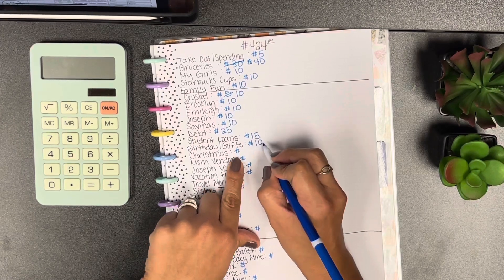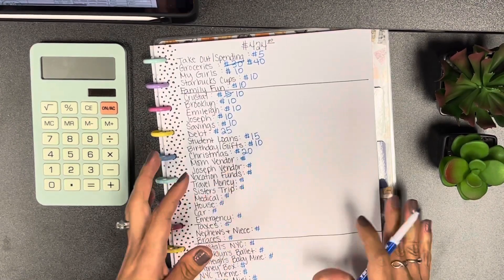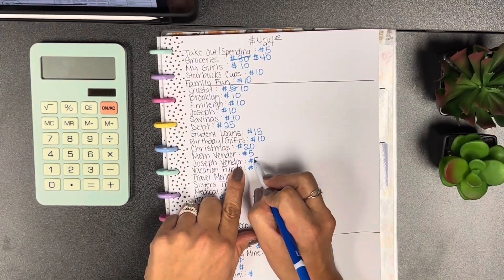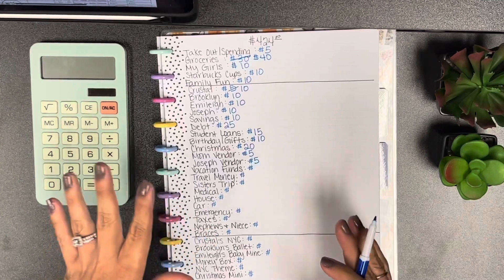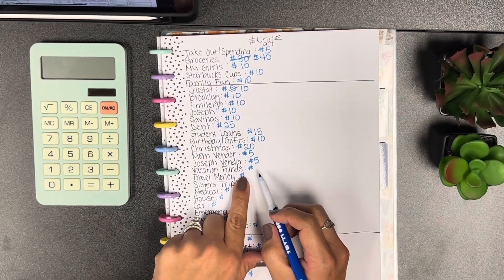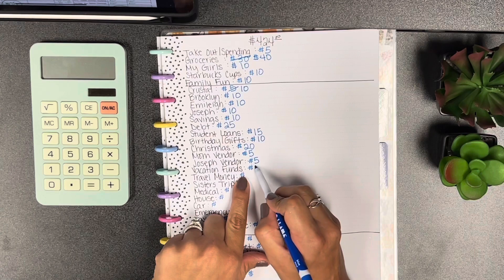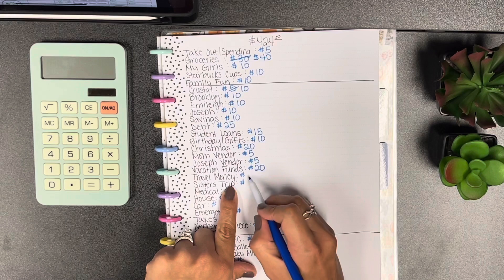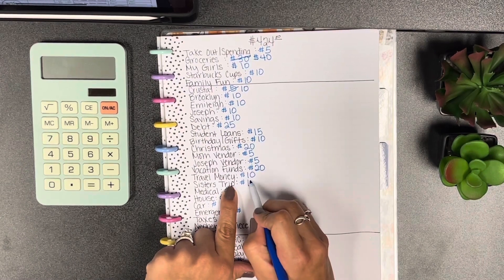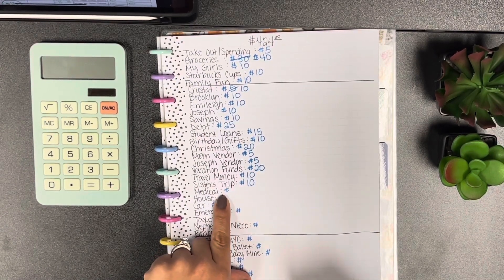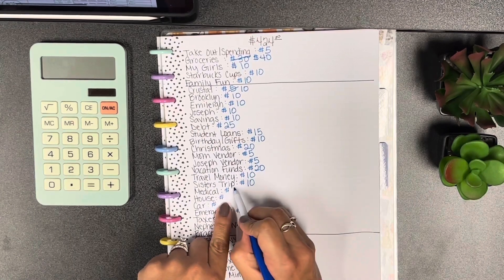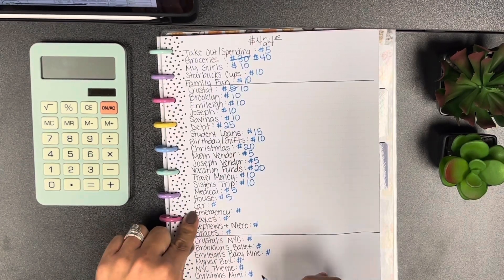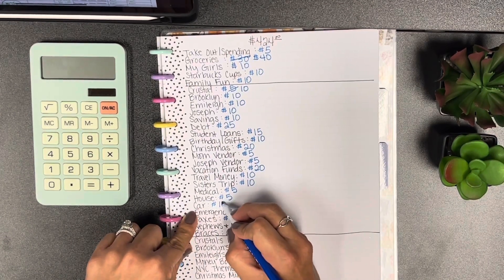Birthday and gifts we're gonna add 10. Christmas we're gonna add 20. My mom and my husband they each got five this week just because we didn't do well at our show this weekend. Vacation funds we're gonna add 20, travel money we're gonna add 10.